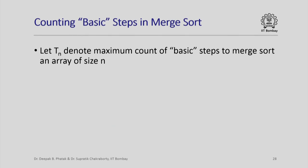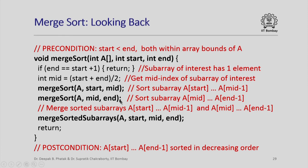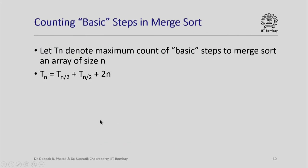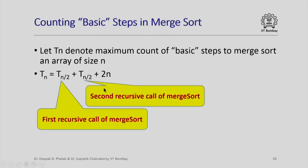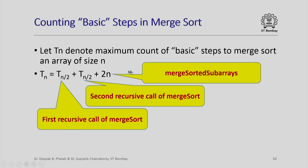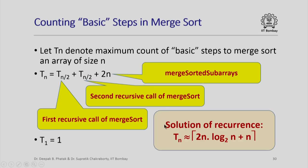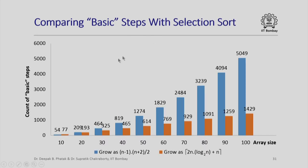Now how many basic steps does the whole of merge sort require? Let T(n) denote the maximum count of basic steps to sort an array of size n. Merge sort calls itself twice with half the array size, then merges: T(n) = T(n/2) + T(n/2) + 2n, with T(1) = 1 as the base case. Solving this recurrence relation using standard techniques gives T(n) ≈ ⌈2n log₂n⌉ + n. Compare this with the number of basic steps required in selection sort.